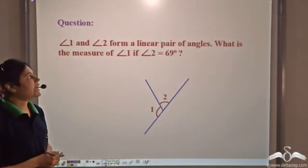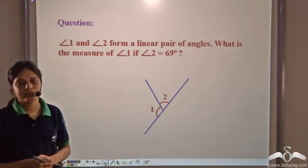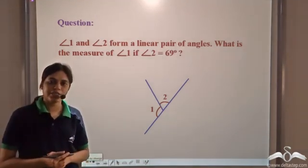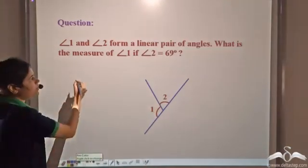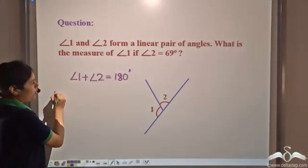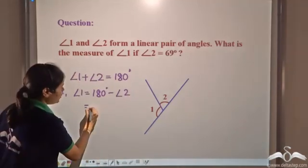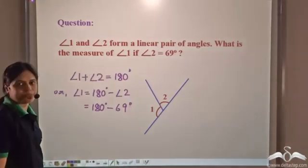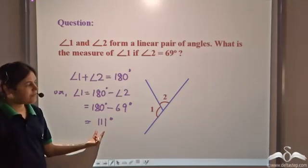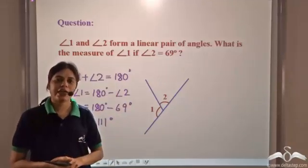Now, angle 1 and angle 2 form a linear pair. What is the measure of angle 1 if angle 2 is equal to 69 degrees? Since they form a linear pair, angle 1 plus angle 2 equals 180 degrees. So angle 1 equals 180 degrees minus angle 2, which is 180 minus 69, which equals 111 degrees. Using the linear pair relation, we can find one angle if the other is given.